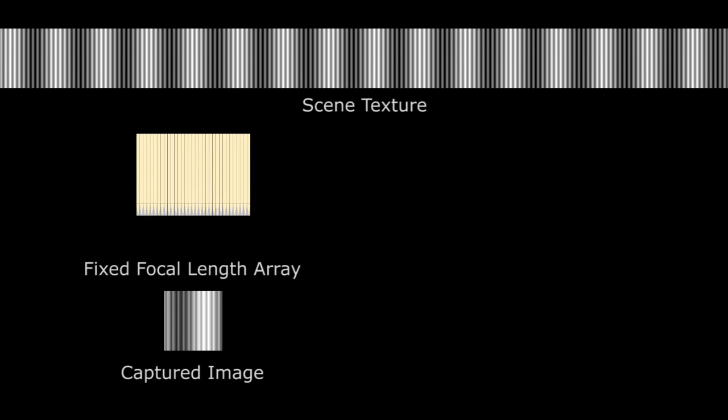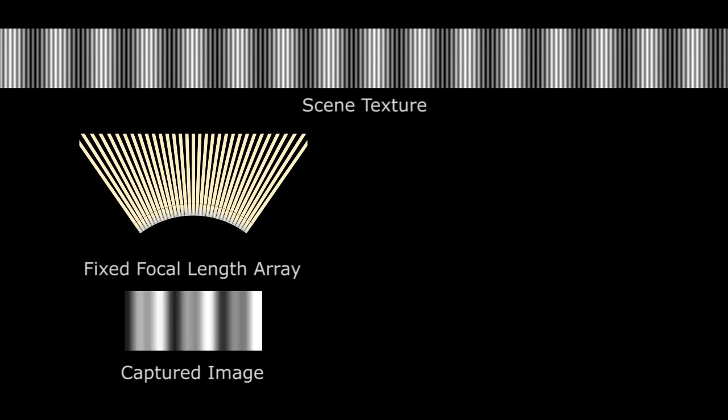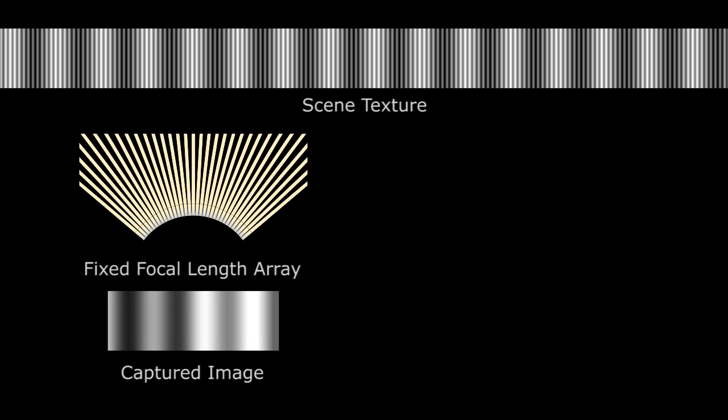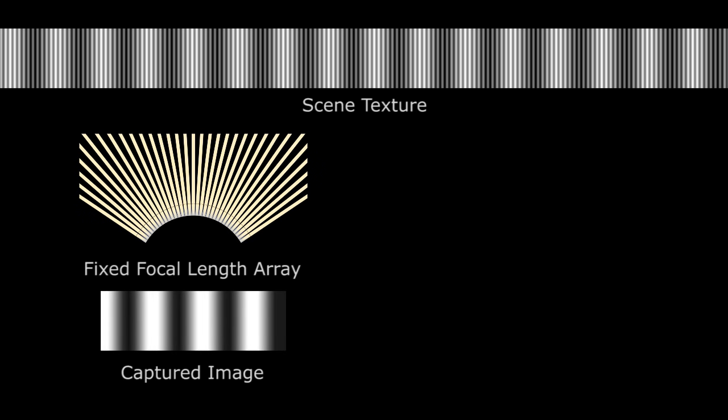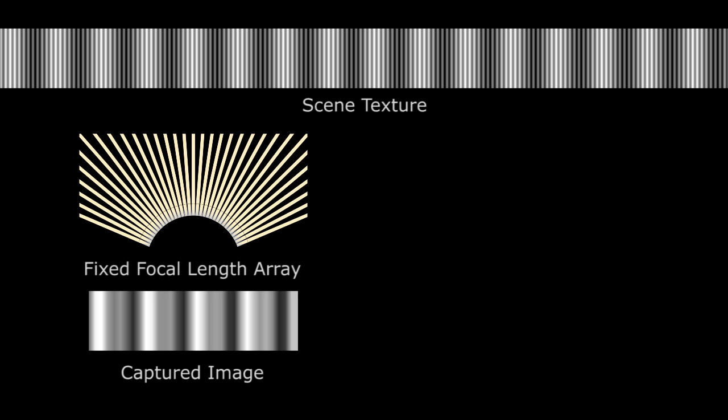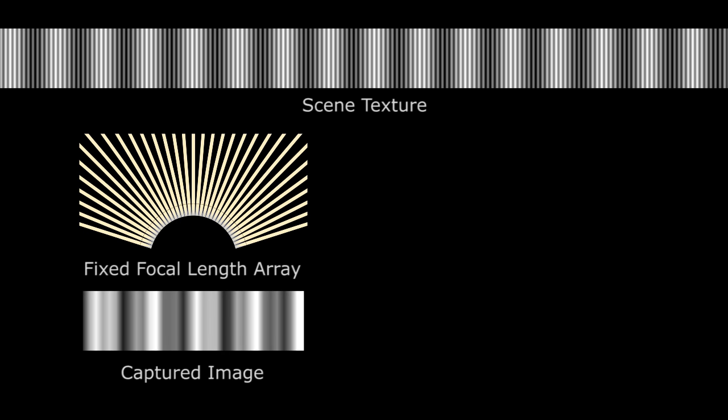Here, a scene texture is imaged by a non-adaptive lens array, where each lens has a fixed focal length. Notice the strong aliasing artifacts in the captured image due to missing information.